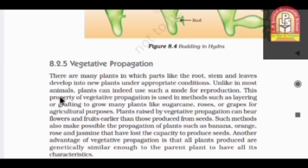Unlike in most animals, plants can indeed use such a mode of reproduction. This property of vegetative propagation is used in methods such as layering or grafting to grow many plants. Which plants are going to undergo vegetative propagation? Here is example: sugarcane, roses or grapes. For agricultural purpose, because sugarcane, roses and grapes, none of these having a seed.